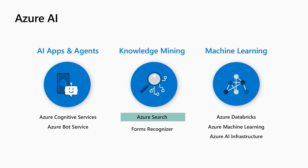Last year at Build, we talked about a new capability — cognitive search — that is now generally available today. I'm very excited to announce that. Cognitive search allows you to go to your files and information, whether structured or unstructured — on Azure SQL, Cosmos DB, or files on blob storage. Then we apply machine learning algorithms, a set of what we call skills, and create a fully searchable index with this structured information.